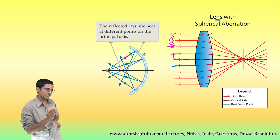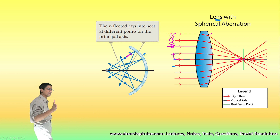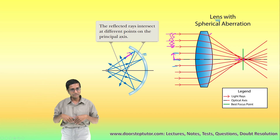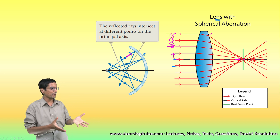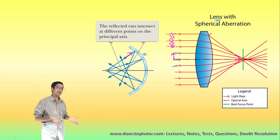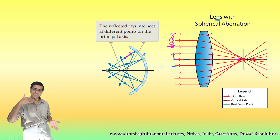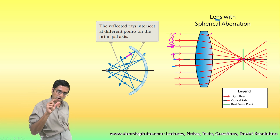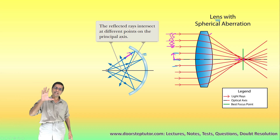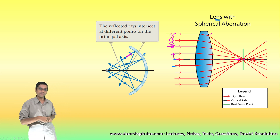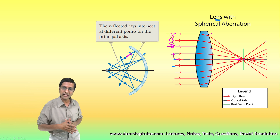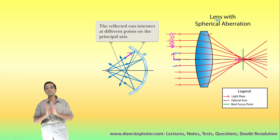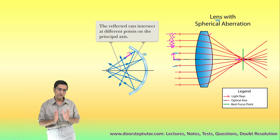This spherical aberration is of course only with real mirrors and real lenses. When you are doing ray tracing on paper it does not really apply, but when we are doing experiments in the actual lab, this really applies. So make sure that your object is not very large when doing actual experiments, otherwise spherical aberration will come into picture and you will not be able to get a focused image of the object.